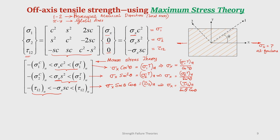Naturally, the value of sigma_x is decided by the value of θ. Suppose we try to plot the strength versus θ. At θ = 0, cos(0) = 1, so sigma_x = sigma_1Tu. At θ = 90, cos²θ = 0, so sigma_1Tu/cos²θ goes to infinity.